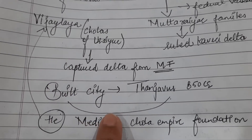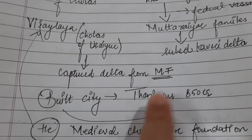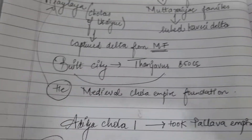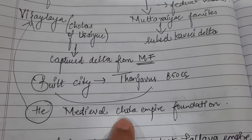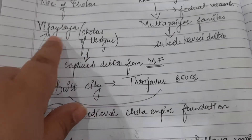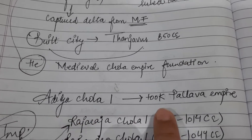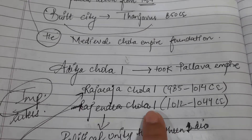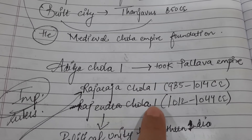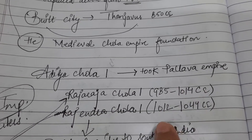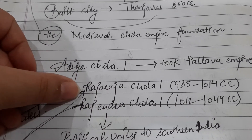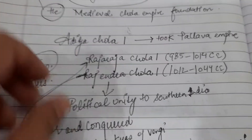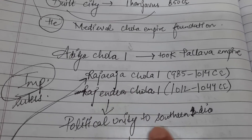Vidyalaya built a city - the name of the city was Tanjavur. It started around 850 CE. He built the city and laid the foundation of the medieval Chola empire. After him, Aditya Chola came and took over the Pallava empire through fights and wars, capturing most of it. After him came his successors: Raja Raja Chola I and Rajendra Chola I - these were the most important rulers of the Chola empire. Together these two gave political unity to southern India, making it function as one unit.